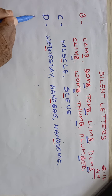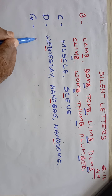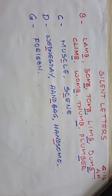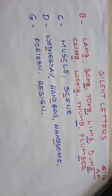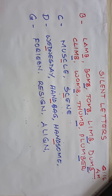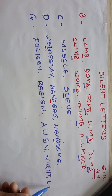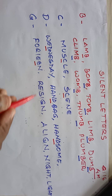G is silent in certain words: foreign, resign, align, night, light. In all these words, G is silent. The examiner will give you a question with certain words and you have to identify which letter is silent.